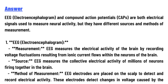The answer to the question: both signals are used to measure neural activity, but they have different sources and methods of measurement. First, EEG measurement — EEG measures the electrical activity of the brain by recording voltage fluctuations resulting from ionic current flow within the neurons of the brain. EEG measures the collective electrical activity of millions of neurons firing together in the brain.